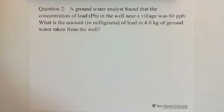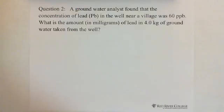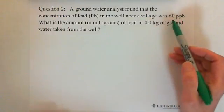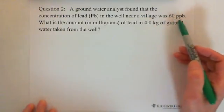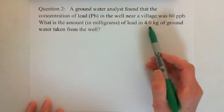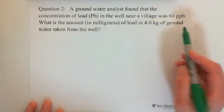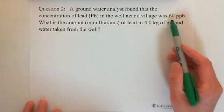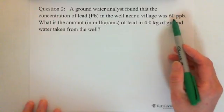In this question we are looking for the amount of lead, which is the mass of solute. We are given the concentration of lead, which is 60 PPB, and the mass of solution is 4 kilograms of ground water. So we follow the formula. We start from 60 PPB.